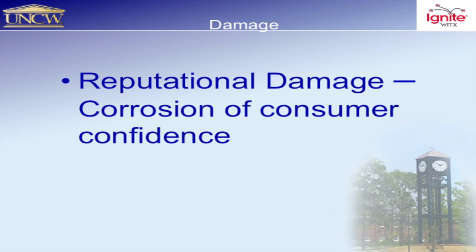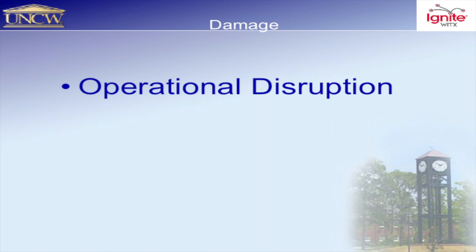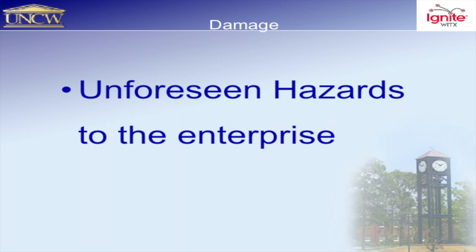Operational disruption — you can have a distributed denial of service, and it causes us to be delayed in a lot of our day-to-day processes. Some of the unforeseen hazards are in the enterprise: we don't know what we don't know. It takes a long time to get back up once you're down. It's not something you just magically switch on. These are things associated with somebody putting in malicious code with no idea what's going on.